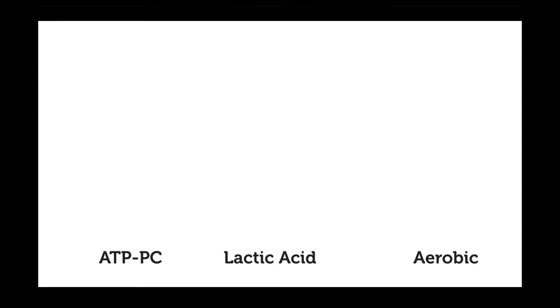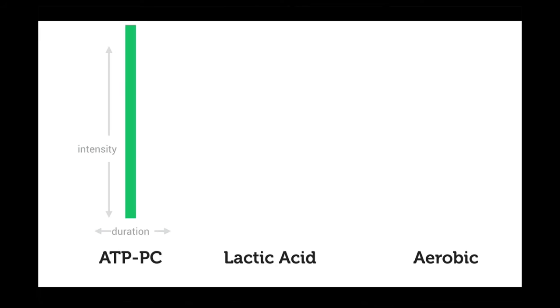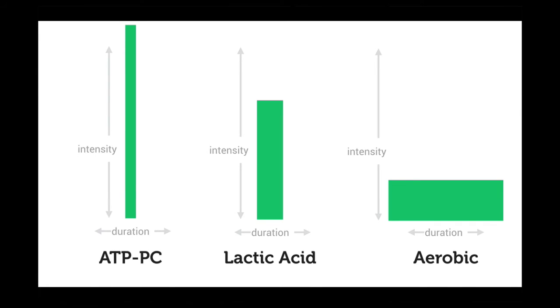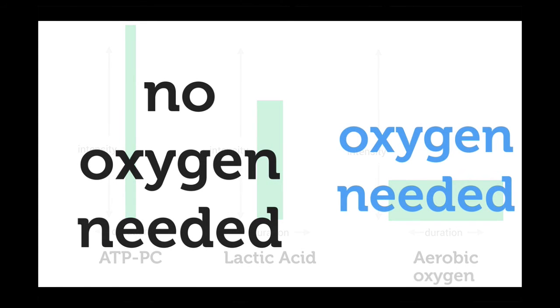Our body has three systems that allow energy to be released to initiate movement: the ATP system, the lactic acid system, and the aerobic system. The body will only use one system at a time, and the system used depends on the intensity of the movement as well as the duration of the activity. It is important to note that the ATP-PC system and lactic acid system do not require oxygen, whilst the aerobic system does require oxygen to resynthesize ATP.